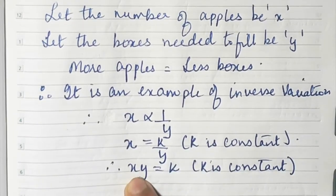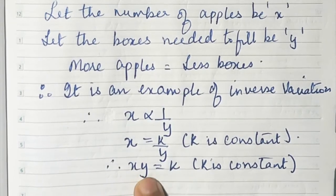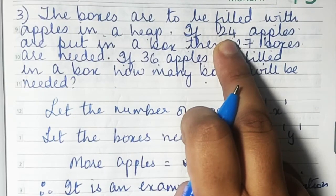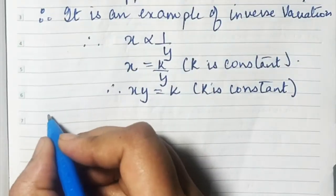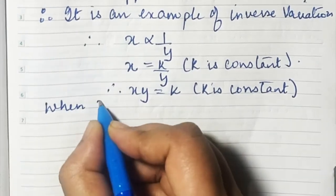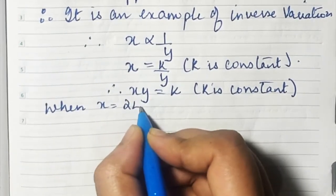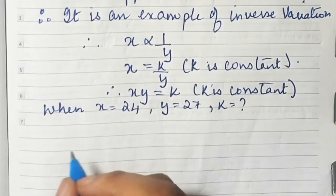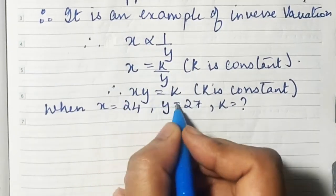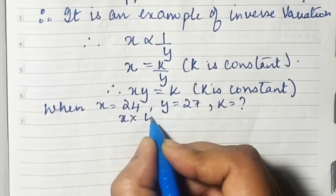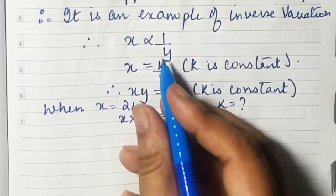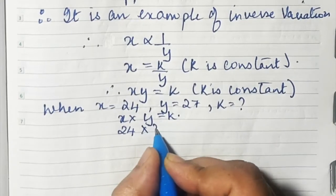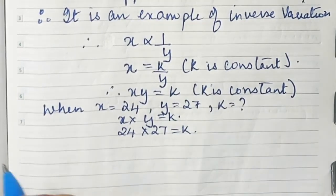Now substitute the values of x and y to find the constant first. We have 24 apples and 27 boxes. So when x is equal to 24 and y is equal to 27, our equation is x into y equals k, so 24 into 27 equals k.